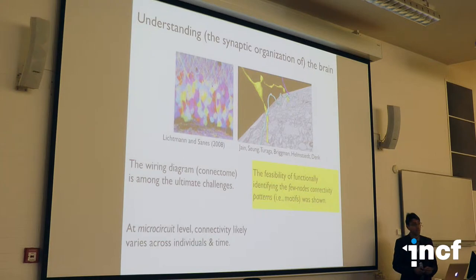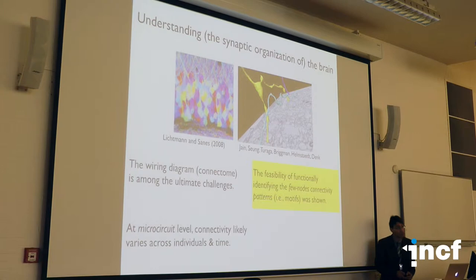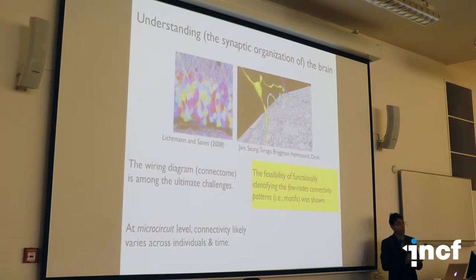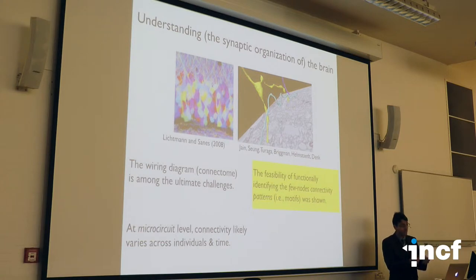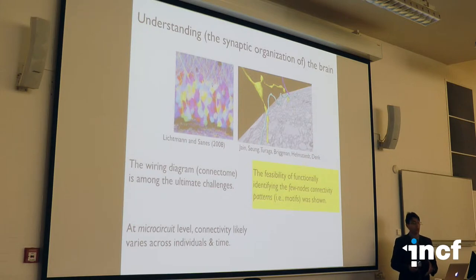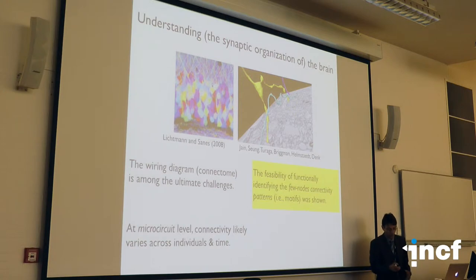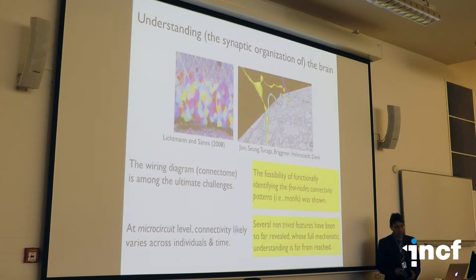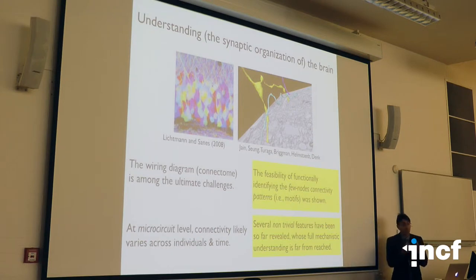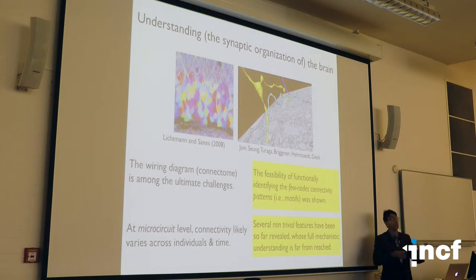Something that was proposed and shown to be technologically accessible in the recent literature is the so-called few-nodes wiring diagram dissection — the dissection of the connectivity motif at the level of small microcircuits. So not thousands of neurons, not billions, but a few: two, three, four. I hope to convince you that this is enough, and it gives some initial interesting features, among them that several non-trivial, non-random features have been revealed. Particularly, connectivity is non-random.